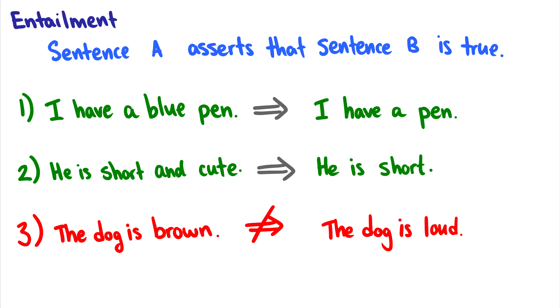Entailment is a little bit more confusing. But entailment is essentially when you have a sentence A that asserts that another sentence B is true. So given some sentence, you can make another statement about that sentence. So for instance, if I say I have a blue pen, this would entail that I have a pen. Because I'm being really specific here, I'm saying I have a blue pen. So if I have a blue pen, then surely it must be true that I have a pen. Or if I say he is short and cute, he is short and he is cute, then clearly he is short. Okay, but if we say something like the dog is brown, from this sentence, we cannot get that the dog is loud. There's nothing about the dog being brown that makes us believe that the dog is loud. So there's no entailment in three.